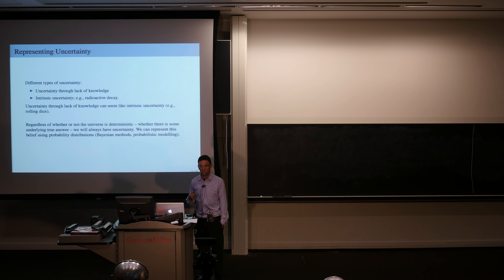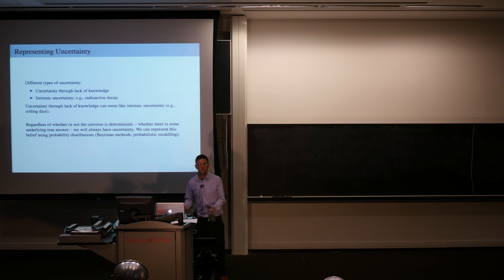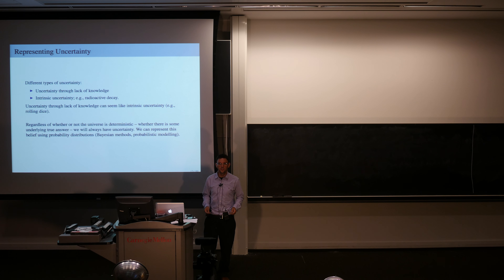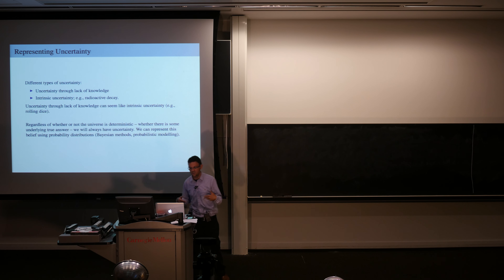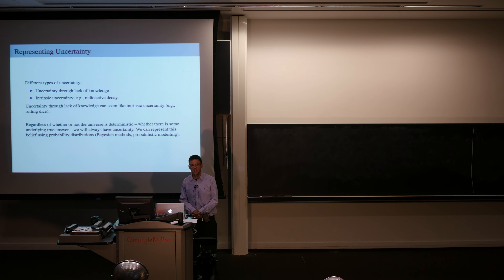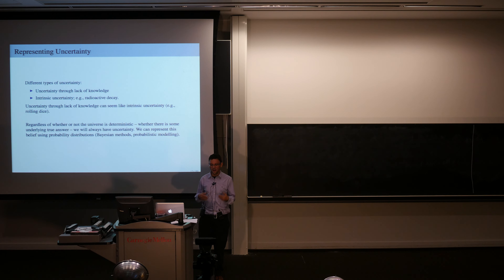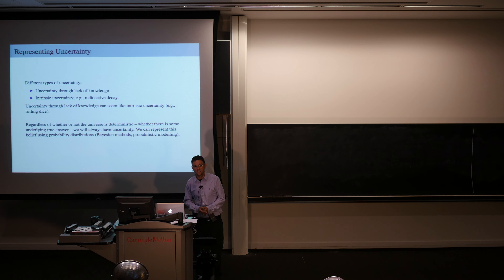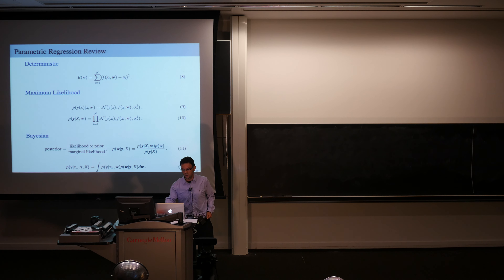We'll always have uncertainty and should try to represent it. We can have uncertainty through lack of knowledge or intrinsic uncertainty — radioactive decay is considered intrinsically uncertain. Rolling dice might seem to have equal probability per side, but in principle modeling the throw strength, weighting, friction, and wind would let us exactly predict the outcome. Even if the world is deterministic, we'll never know all initial conditions, and we represent this belief using probability distributions — that really embodies Bayesian inference.